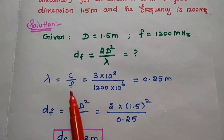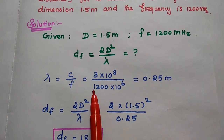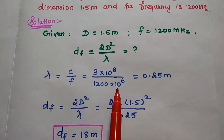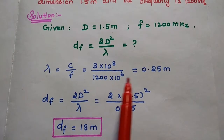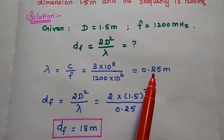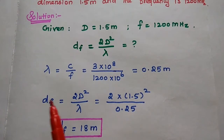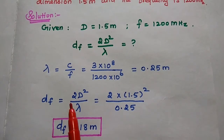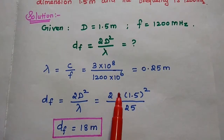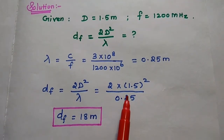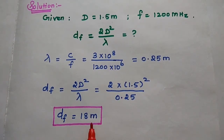λ = c / f, where c = 3 × 10⁸ and f = 1200 MHz = 1200 × 10⁶. This gives λ = 0.25 meter. Substituting into the formula: df = 2D² / λ = 2 × (1.5)² / 0.25. We get the far field distance as 80 meters.